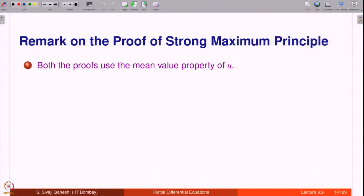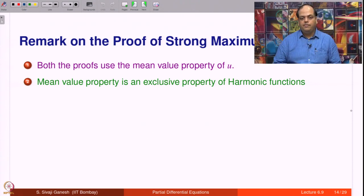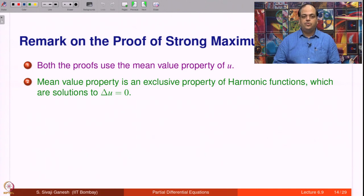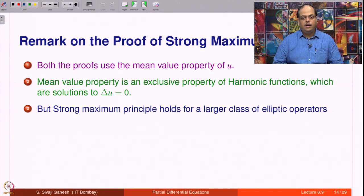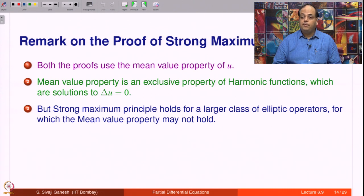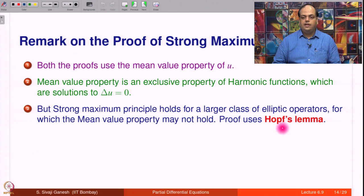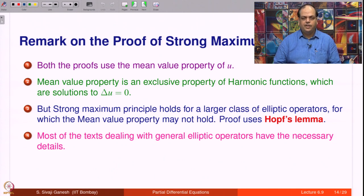Both proofs use the mean value property of u, namely in step 1. The mean value property is an exclusive property of harmonic functions — we have shown not only that every harmonic function has the mean value property, but also that every continuous function with the mean value property is harmonic. The strong maximum principle also holds for a larger class of elliptic operators for which the mean value property may not hold. The proof in that general case uses what is known as Hopf's lemma. Most texts dealing with general elliptic operators have the necessary details.